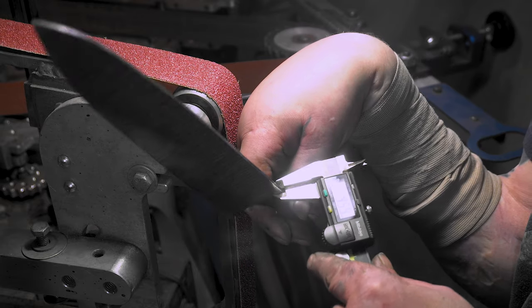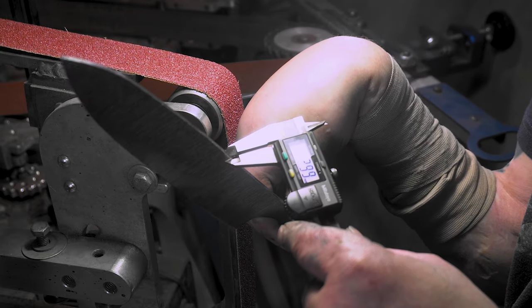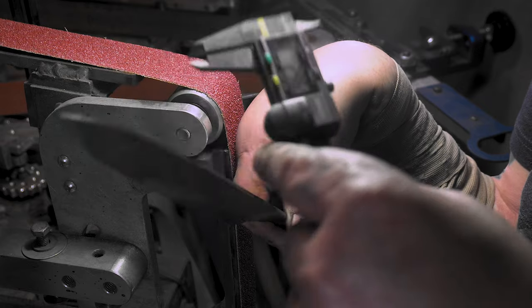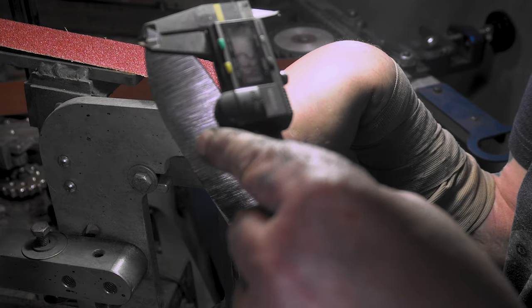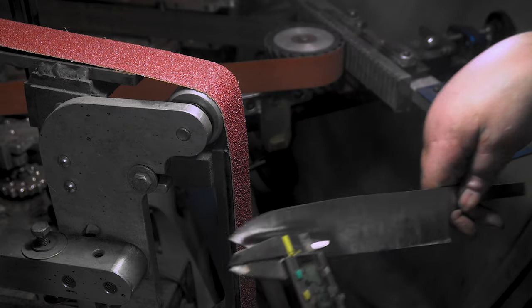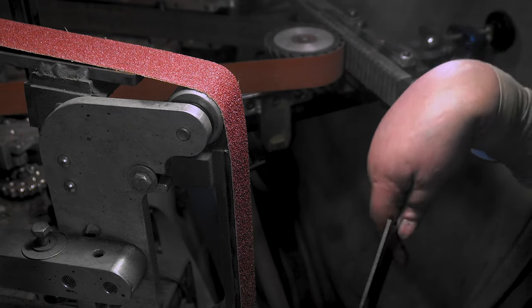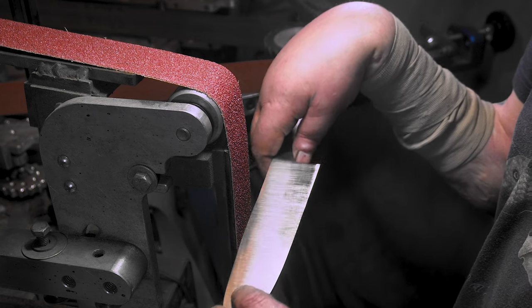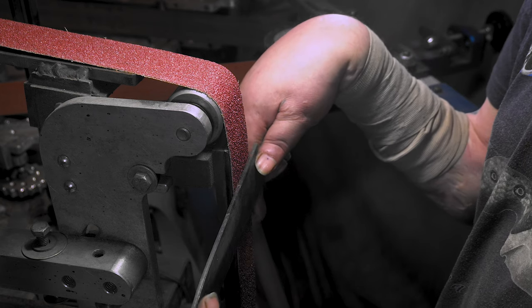Alright, we're at 3.5 here, 3 right there, 2.8, and then 1.9. So I'm going to leave it like that and we'll start grinding the bevels in. Since we've already worn this 36 in, let's go ahead and just break the 90s and get to it.